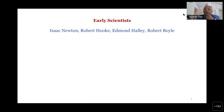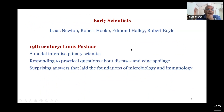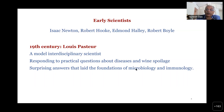The problem of interdisciplinary science didn't exist for early scientists. Newton, Robert Hooke, Edmund Halley, and Robert Boyle never confined themselves to any particular discipline. Louis Pasteur was a model interdisciplinary scientist — he looked at real problems like how wine was getting spoiled and asked questions about diseases, which led to surprising answers in microbiology and immunology.